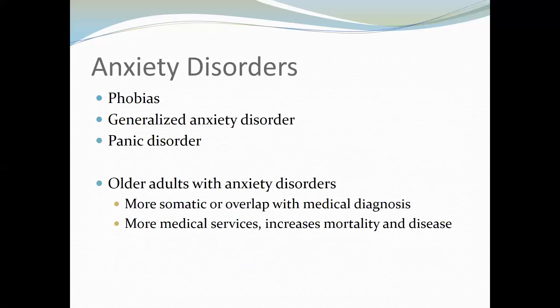Another common category of disorders in older adults is anxiety disorders. Phobias, generalized anxiety disorder, and panic disorders all fall into this category, with specific phobias and social phobias being most common. Rates of anxiety disorders in older adulthood are lower than at other points, but a high number of subclinical anxiety symptoms remain. Anxiety disorders are generally stable throughout adulthood, so individuals with anxiety in middle adulthood are more likely to have it in older adulthood as well.